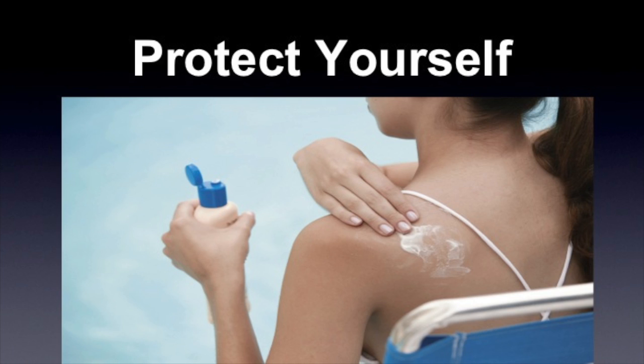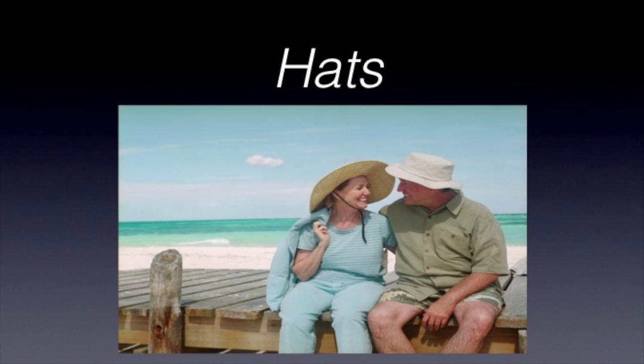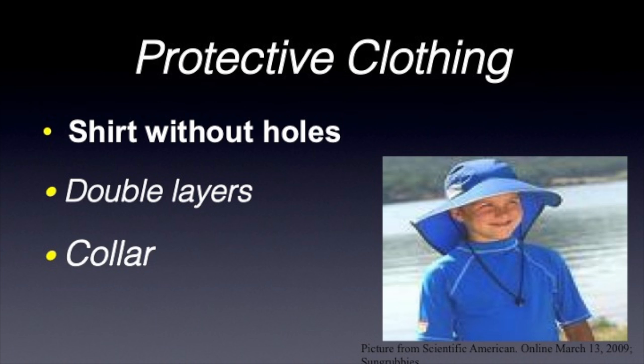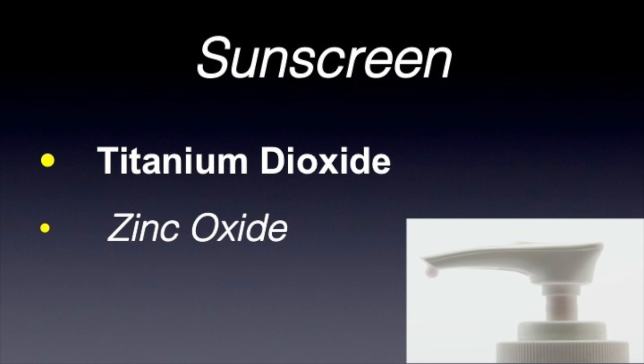The key features of preventing skin cancer are prevention with sunscreens and avoiding too much sun. Use liberal sunscreen frequently, applying it 30 minutes before exposure to the sun, which allows the sunscreen to form a thin layer. Reapply after swimming or sweating, using a broad-spectrum sunscreen. Hats can help protect, as well as protective clothing without holes that keeps the sun from shining through and damaging your skin, and a collar is helpful. Seek shade, avoid tanning beds especially, and use sunscreens with titanium dioxide and zinc oxide.